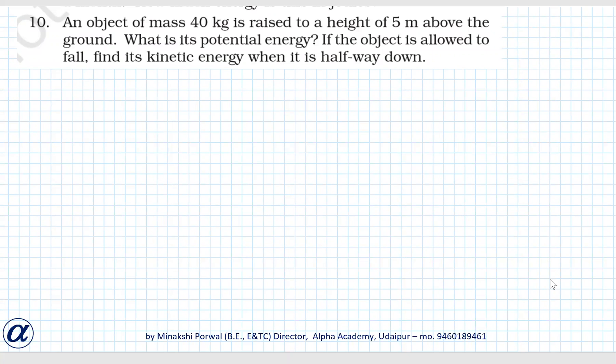Okay, chapter 11, question 10. An object of mass 40 kg is raised to a height of 5 meters above the ground. What is its potential energy? So finding potential energy is very direct. Mass equals 40 kg, it's given. Height equals 5 meters, and we can assume g as 10 meters per second squared because nothing is given.